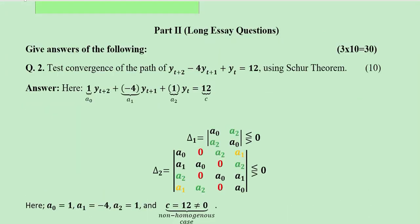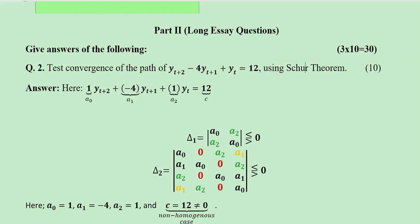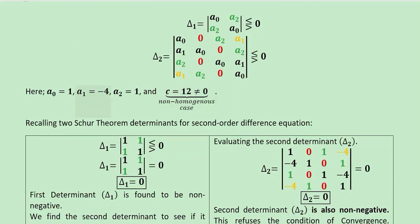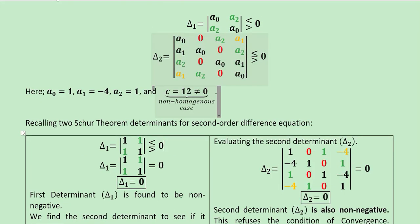The first long question is about the test of convergence of a given second-order difference equation using the Schur theorem. We extract the given data: A0 is equal to 1, and A1, A2, and the value of C can also be extracted. There are two determinants for the second-order difference equation. Since C is not equal to 0 it is a non-homogeneous case, and we make these two determinants as per the order of the difference equation.